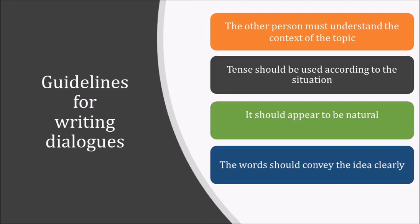To write a dialogue, it is important to understand the topic being discussed. The most important thing to take care of is the use of tense. Tense of the dialogue should be used according to the situation. If a speaker is talking of something which has already happened, then past tense sentences need to be used. Similarly, if something is going on, use present tense sentences, and if something is yet to happen, use future tense sentences.